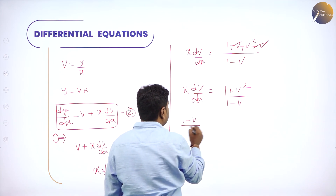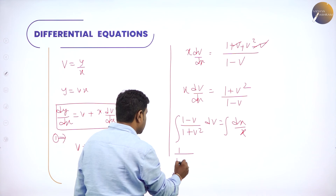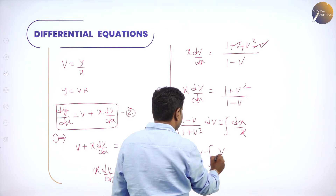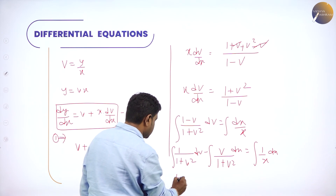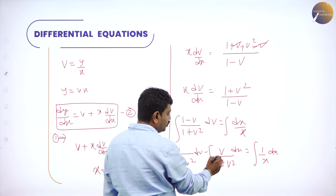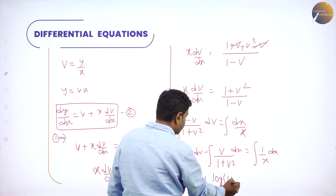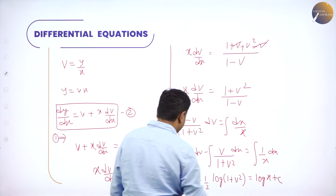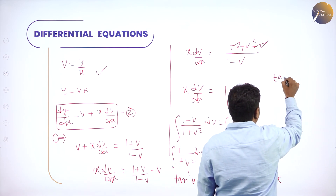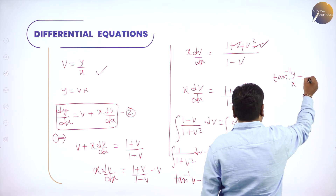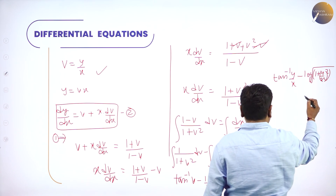Separating variables: (1 − v)/(1 + v²) dv = dx/x. Split as 1/(1 + v²) dv − v/(1 + v²) dv = dx/x. Integrating: tan⁻¹(v) − ½·log|1 + v²| = log x + C. Substituting v = y/x: tan⁻¹(y/x) − ½·log|1 + (y/x)²| = log x + C.